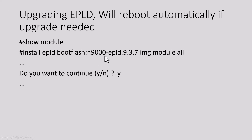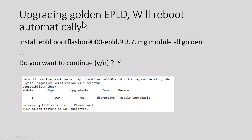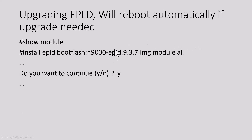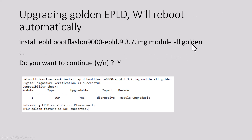Hit yes for the EPLD installation. After the installation of the EPLD, the switch will reboot automatically if an upgrade is needed; otherwise, it won't reboot. Now it is time to check whether it needs a golden EPLD upgrade — it will also reboot automatically if it does need an upgrade. Issue this command, which is the same as before but with 'golden' added at the end of the EPLD image command. Hit yes and wait for the process to complete. For most of these switches, it will tell you that EPLD golden feature is not supported.